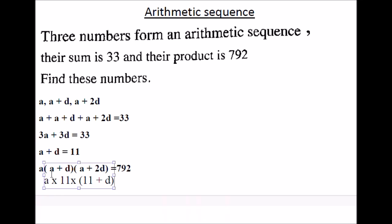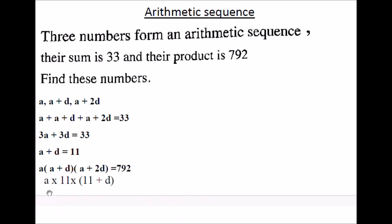Use the first equation to simplify the second equation. A plus D is 11, so put A plus D equals 11. And in the second bracket, A plus 2D equals A plus D plus D. So the first A plus D is 11, so this is equal to 11 plus D. So finally, we have A times 11 times 11 plus D. This is equal to 792. This is a second degree equation — we can solve the two equations and find A and D.